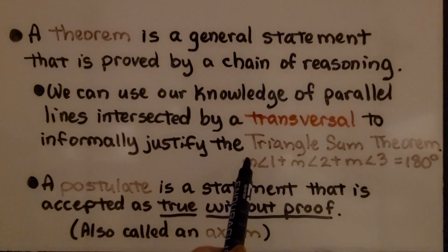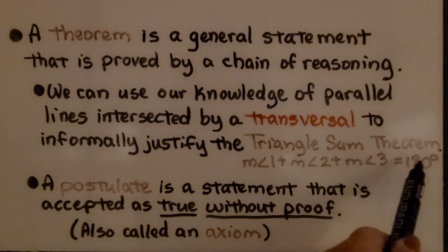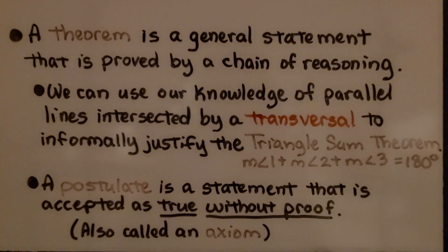Remember from last video, the measure of angle 1 plus the measure of angle 2 plus the measure of angle 3 equals 180 degrees. A postulate is a statement that is accepted as true without proof. They're also called axioms.